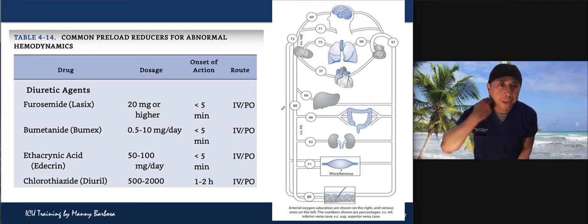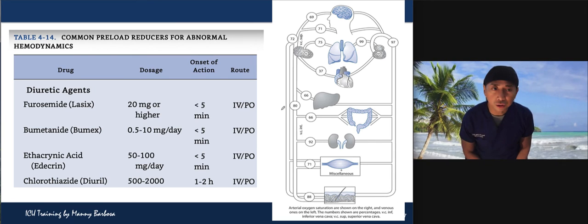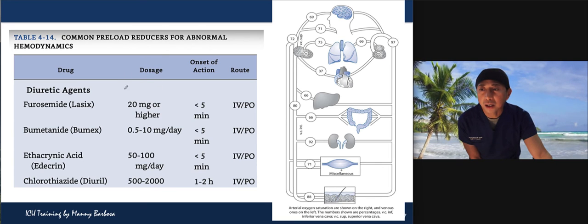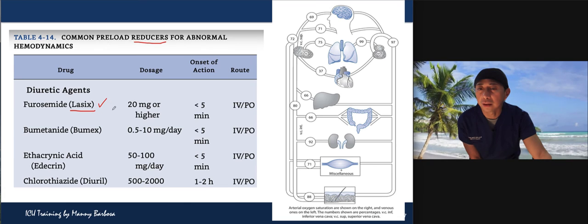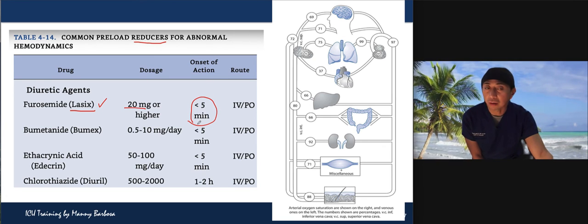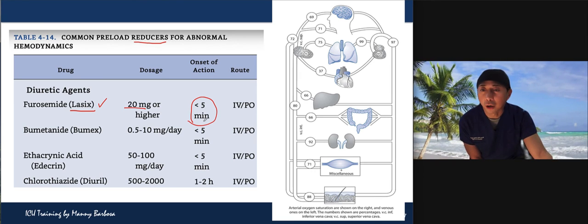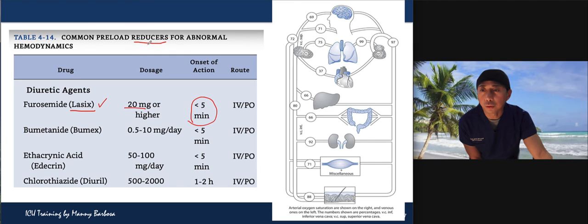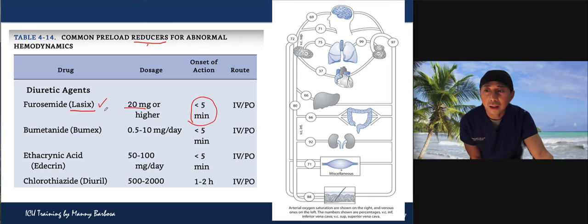Understand the medications doctors order — you are an additional layer of protection. If CVP is high you need to reduce it, and the typical medication is Lasix (furosemide) 20 mg or higher IV with onset less than five minutes. The patient should be producing more than 500 mL of urine within six to seven minutes. If they are not, call the doctor for a higher dose. However, if blood pressure is low, do not give Lasix — communicate that to the physician.